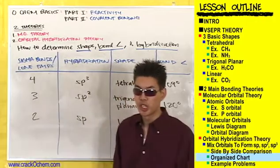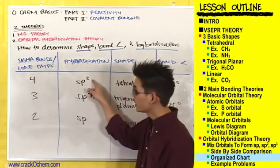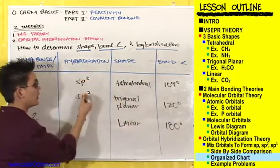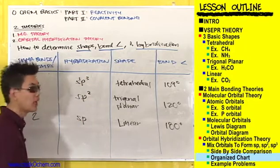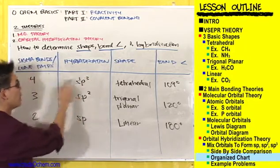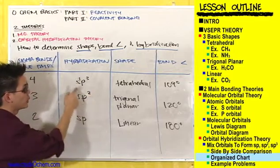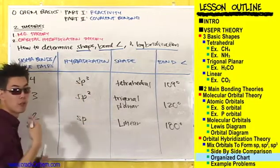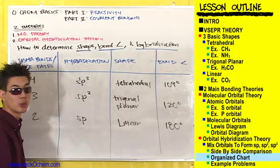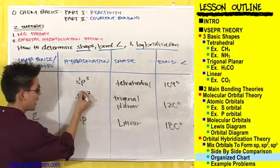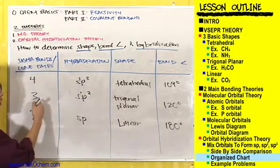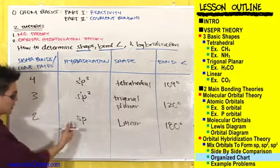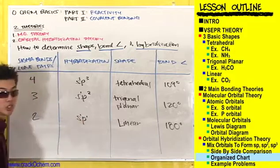If you ever want to double-check yourself, the superscript numbers in the hybridization label should add up to the number of sigma bonds. We could write sp3 as s1p3 — one plus three equals four sigma bonds. The same is true for sp2: s1p2, one plus two equals three single bonds formed by three sp2 hybridized orbitals. And for sp: s1p1, one plus one equals two sigma bonds.